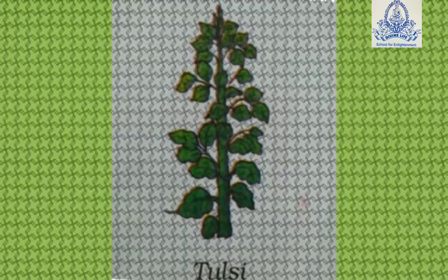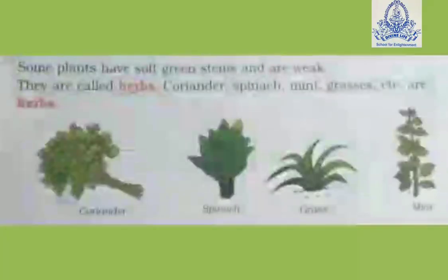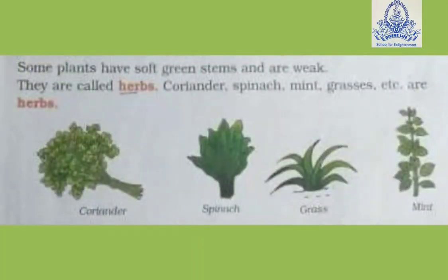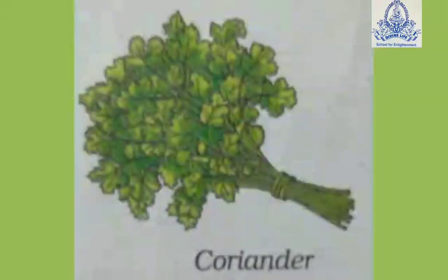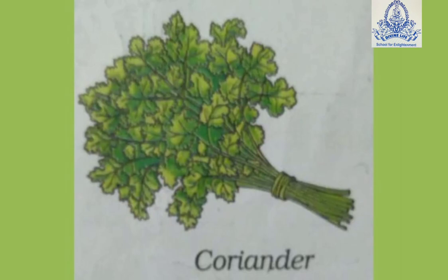Some plants are small and weak. Such plants are called herbs. For example, mint and coriander.